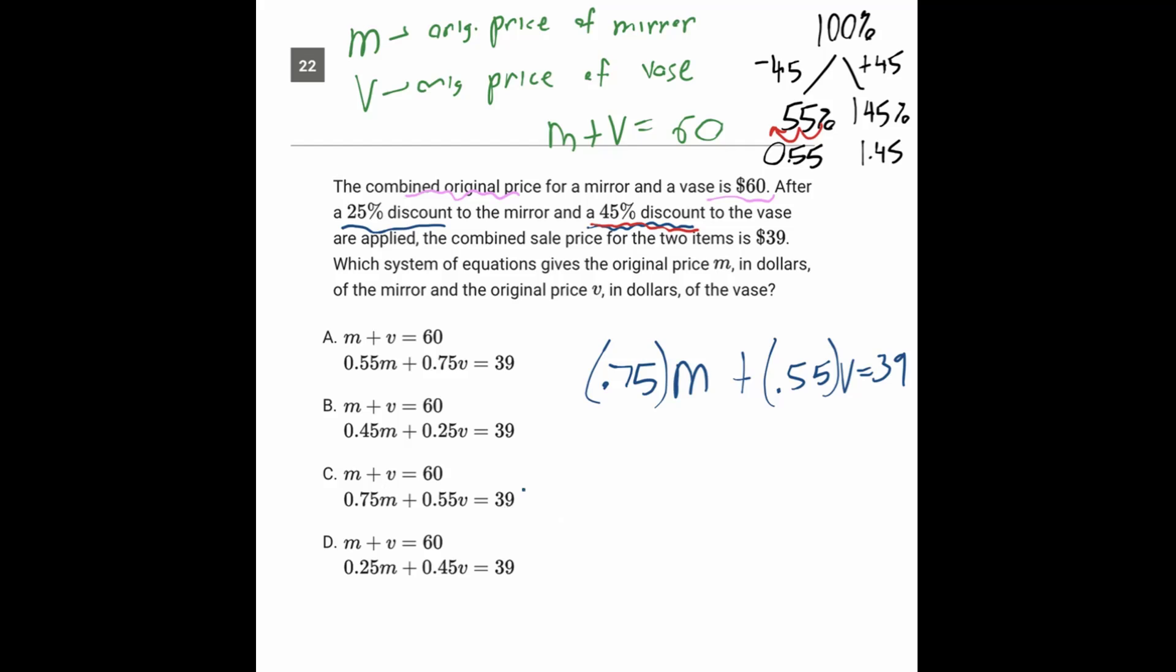So we have 0.75M plus 0.55V equals 39. That matches this one right here, and M plus V is 60, which also matches. So the answer for 22 is C.